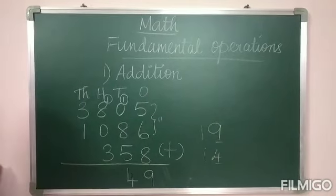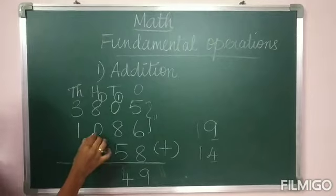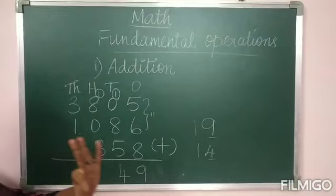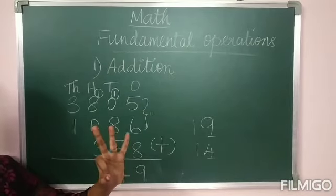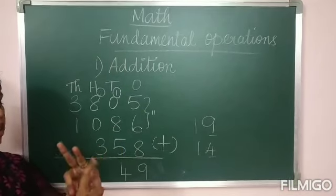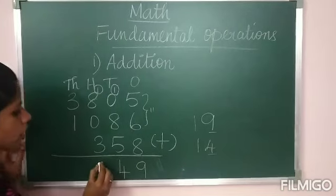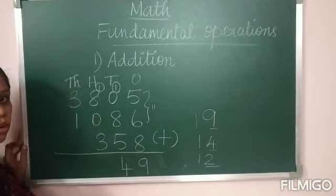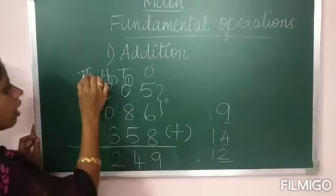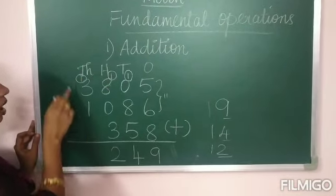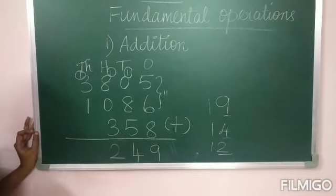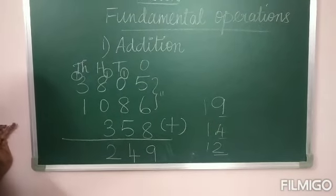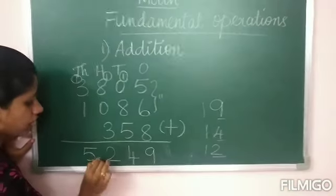1 plus 8 is 9, 9 plus 0 is 9, 9 plus 3: keep 9 in mind, count 3 on fingers — 10, 11, 12. Write 2 here and carry over 1. Then 3 plus 1 plus 1: 3 plus 1 is 4, 4 plus 1 is 5. So write 5.